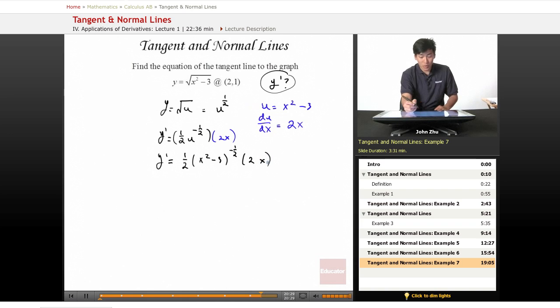Well, the 2 and the 1/2 will cancel and we'll be left with x over the square root of x squared minus 3.